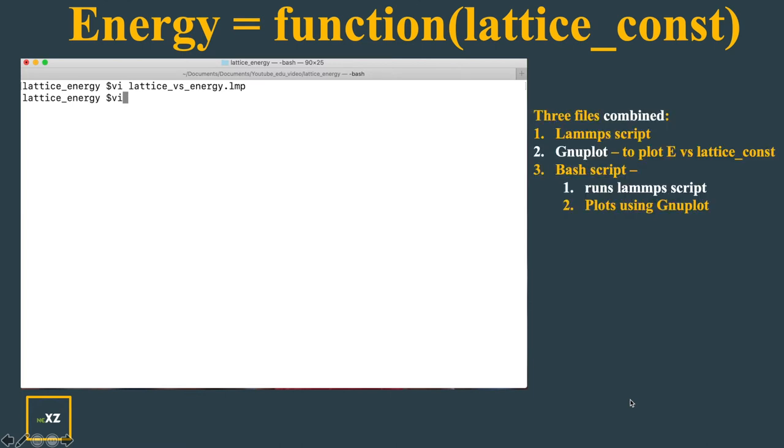Now let's see the LAMMPS script. There are three files. One is LAMMPS script and gnuplot to plot energy versus the lattice constant and the bash script which runs the LAMMPS script and plots using gnuplot.